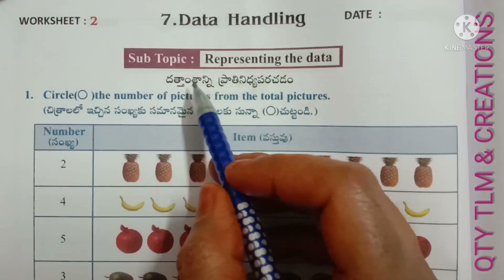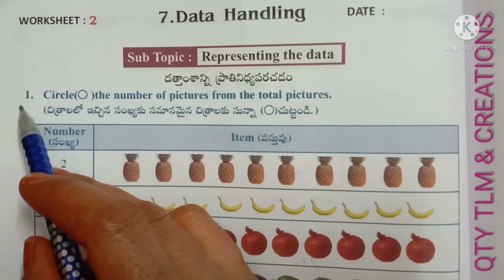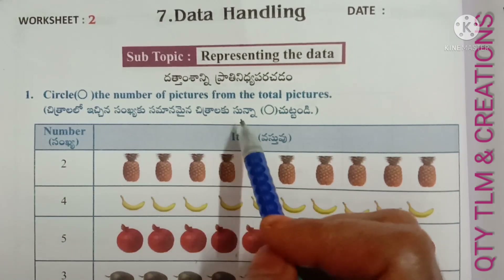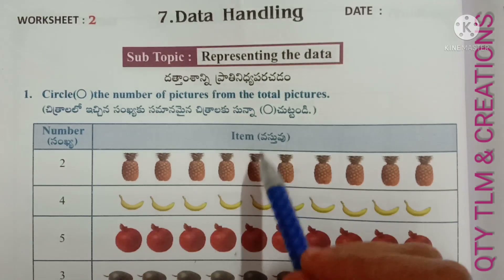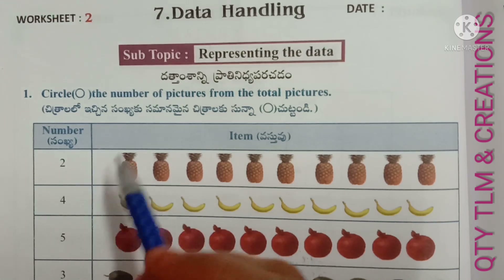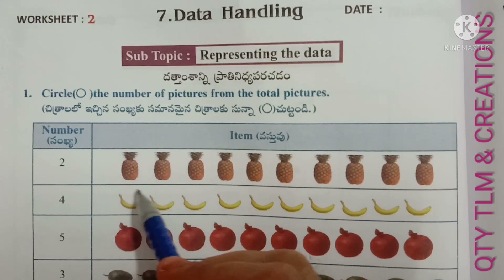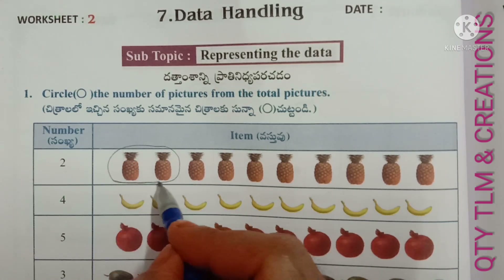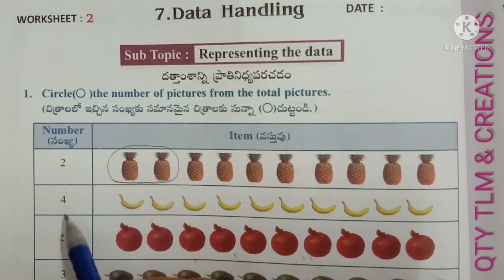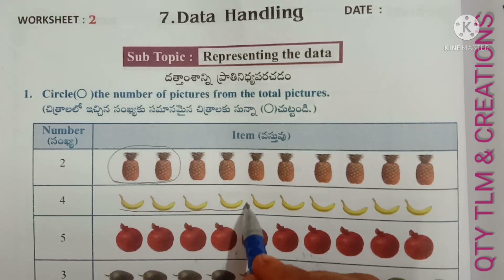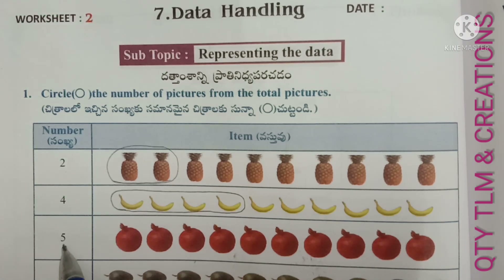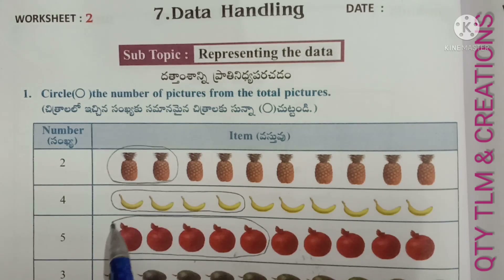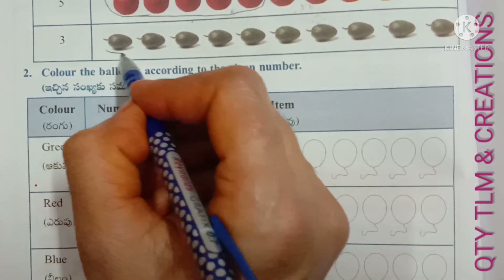Next, Worksheet Number 2. Subtopic: Representing the Data. First question — circle the number of pictures from the total pictures. Here given numbers and here items. Given number is 2, so we have to circle 2 pineapples. So we have to circle 1, 2, 3, 4, 5 pomegranates. Here given number is 3, so we have to circle 3 pictures.